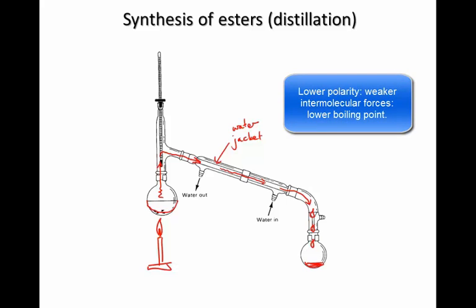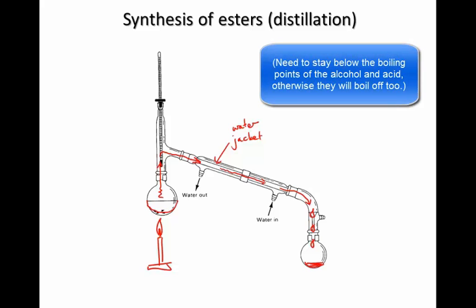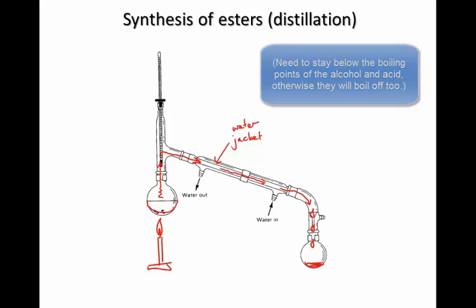So this means that if you keep the temperature under control in this reaction, the acid and the alcohol will remain in the reaction flask. But the ester will evaporate as soon as it's produced. This removes it from the reaction, which keeps driving the equilibrium to the right. And it also allows you to collect your pure product at the other end.